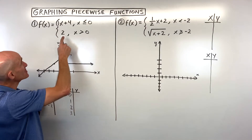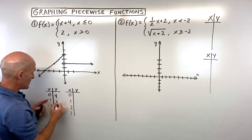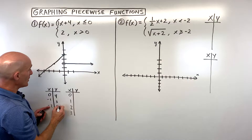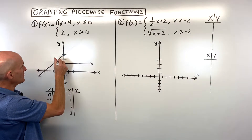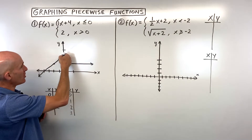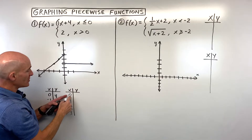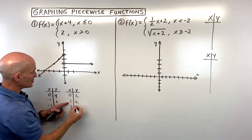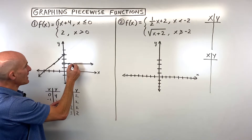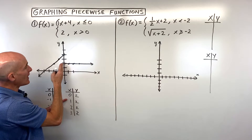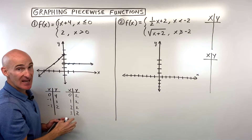Plugging into x plus 4: at x equals 0 we get 4; at x equals negative 1 we get 3; at x equals negative 2 we get 2. We plot those points — (0,4), (-1,3), (-2,2) — draw the line going to the left. For the second piece, y equals 2 for every x value, giving a horizontal line to the right of 0 with an open circle.